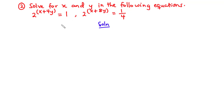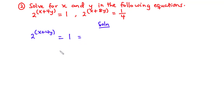To solve for x and y we need to resolve these exponential equations into linear equations. For the first equation, 2 exponent x plus 4y equals 1. We know that any non-zero number raised to the power 0 equals 1, so 1 equals 2 exponent 0. Since the bases on both sides are 2, we can compare exponents, giving us x plus 4y equals 0. We call this equation 1.